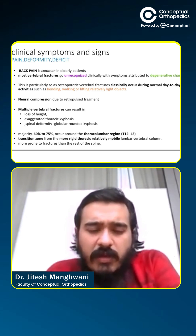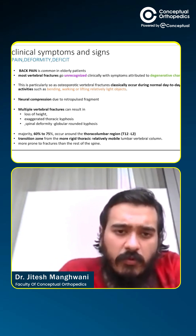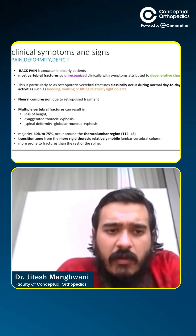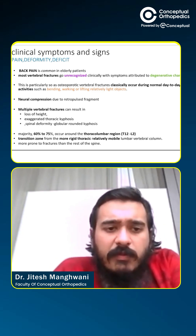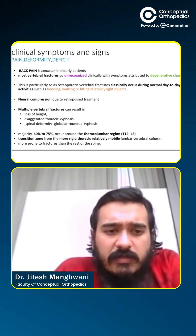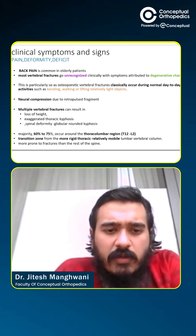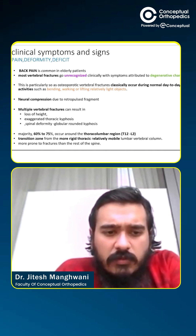Neural compression may occur due to a retropulsed fragment. Multiple vertebral fractures can result in loss of height, exaggerated kyphosis, spinal deformity, and a globular rounded kyphosis.